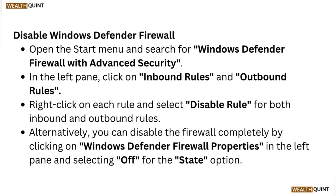In the left panel, click on Inbound Rules and Outbound Rules. Right-click on each rule and select Disable Rule for both inbound and outbound rules. Alternatively, you can disable the firewall completely by clicking on Windows Defender Firewall Properties in the left panel and selecting Off for the state option.